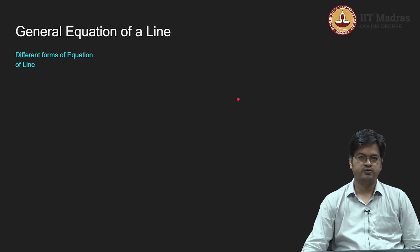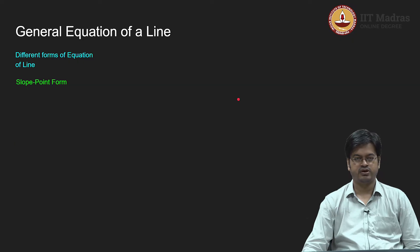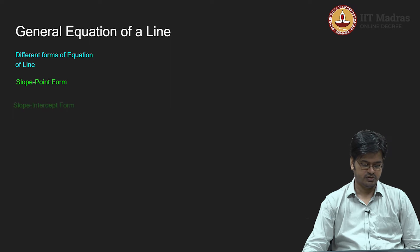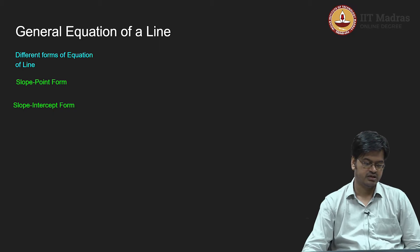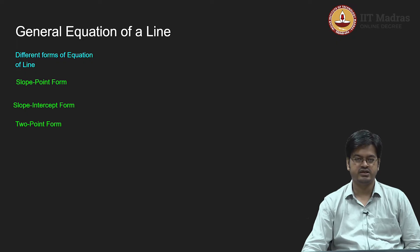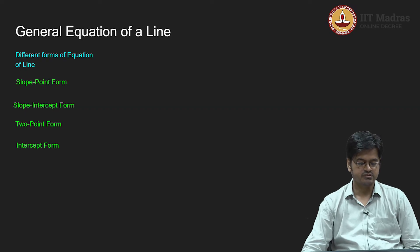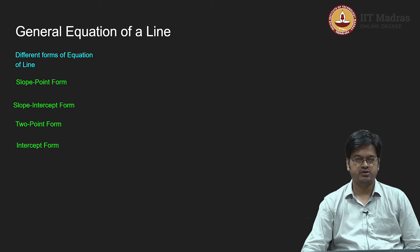In particular we had two forms: one is two-point form and another one is slope-point form. First I will list the slope-point form; a specialization of this is slope-intercept form where instead of a point you have been given an x-intercept or a y-intercept. Then we have also studied two-point form — given two points, how to uniquely determine a line — and a specialized version of that is nothing but intercept form. We can quickly review these forms. Slope-point form: we have a point (x₀, y₀) and a slope m that is given to us.